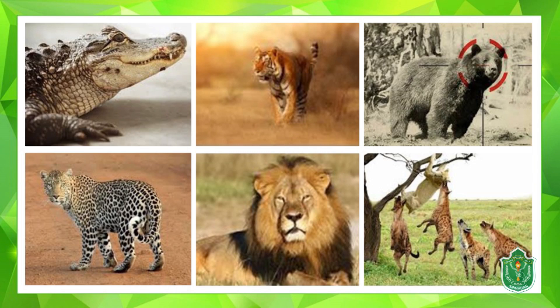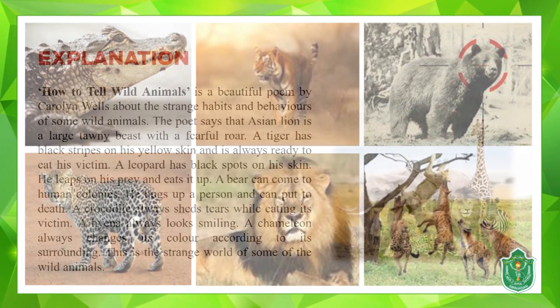If a bear comes to your backyard, he hugs a person and can put them to death because of that tight hug. A crocodile is known for shedding tears while eating its victim — you may have heard of the phrase 'crocodile tears.' While the crocodile gobbles up its victim it sheds tears, which is a biological process, so the tears are actually fake. A hyena always looks like it's smiling, but it's very dangerous. A chameleon deceives you by changing its color according to its surroundings.